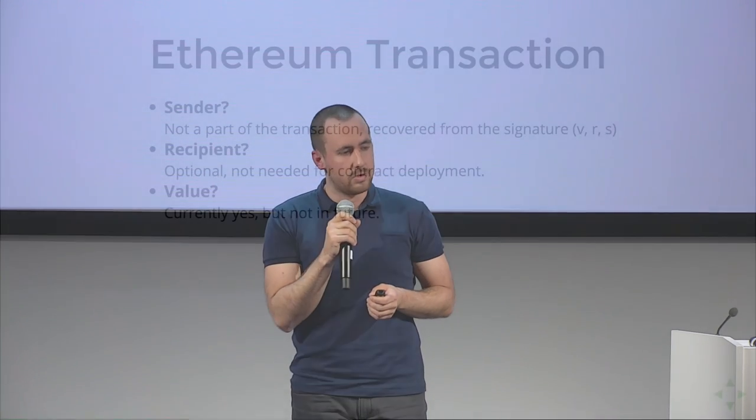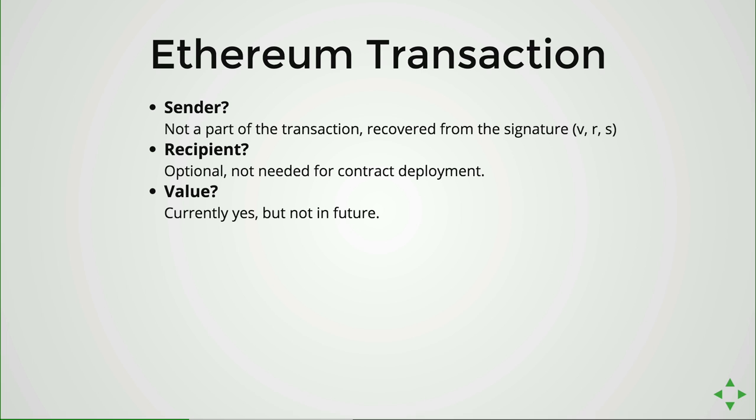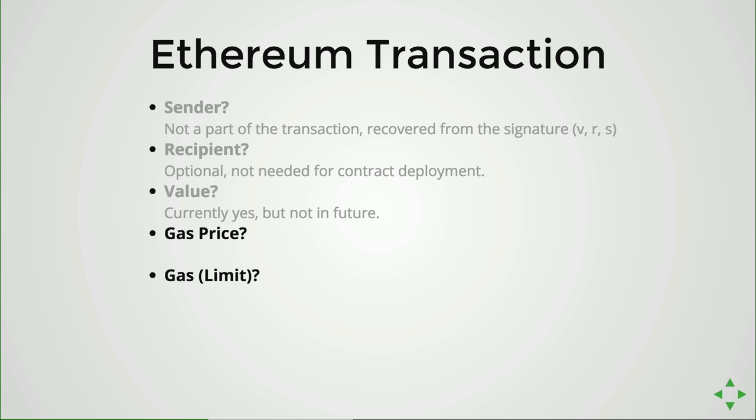We have a recipient, yes — but only if it's not a contract deployment. If we want to deploy a new contract in Ethereum, we don't need a recipient. We have a value — that's a mandatory parameter of a transaction today, but it won't be mandatory in the future; it will change. Also, Ethereum is a global computer, so you can do a lot of computations on it, but you need to pay for those computations. We have a metric to figure out how expensive your computation is, and that metric is called gas.